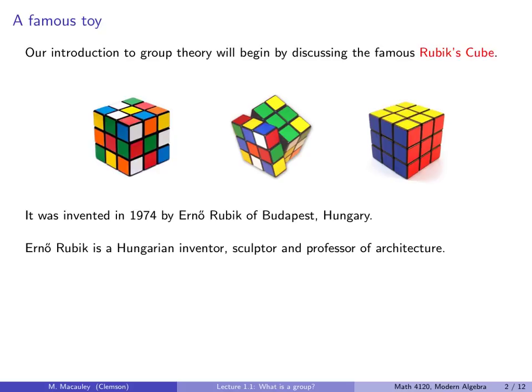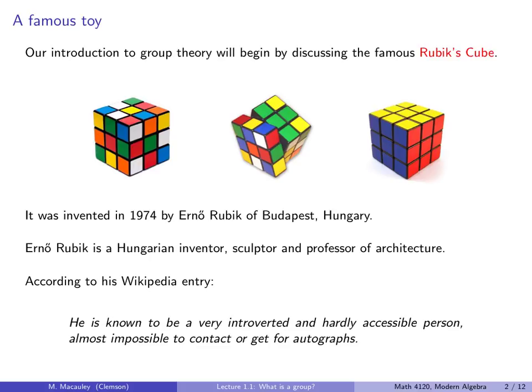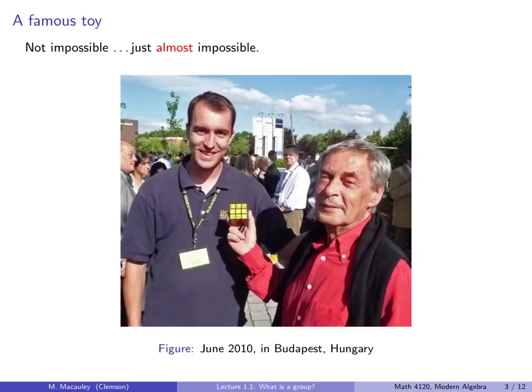Erno Rubik is a Hungarian inventor, sculptor, and professor of architecture. According to his Wikipedia entry, he is known to be a very introverted and hardly accessible person, almost impossible to contact or get for autographs. Not impossible, just almost impossible, as shown by this picture of yours truly and Professor Rubik from 2010 in Budapest, Hungary. I should note that his Wikipedia page has since been updated and that passage has been removed.